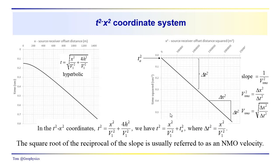The delta t-squared would just be the term x-squared over v₁-squared. So the slope, if we take a look at the slope of the t-squared x-squared response for this reflection from a layer with approximately constant velocity, we have a slope of one over v-NMO-squared. This v-squared is just delta x-squared over delta t-squared. And the V-NMO, the normal moveout velocity, would be equal to the square root of delta x-squared over delta t-squared — the square root of the reciprocal of the slope — often referred to as the moveout velocity.